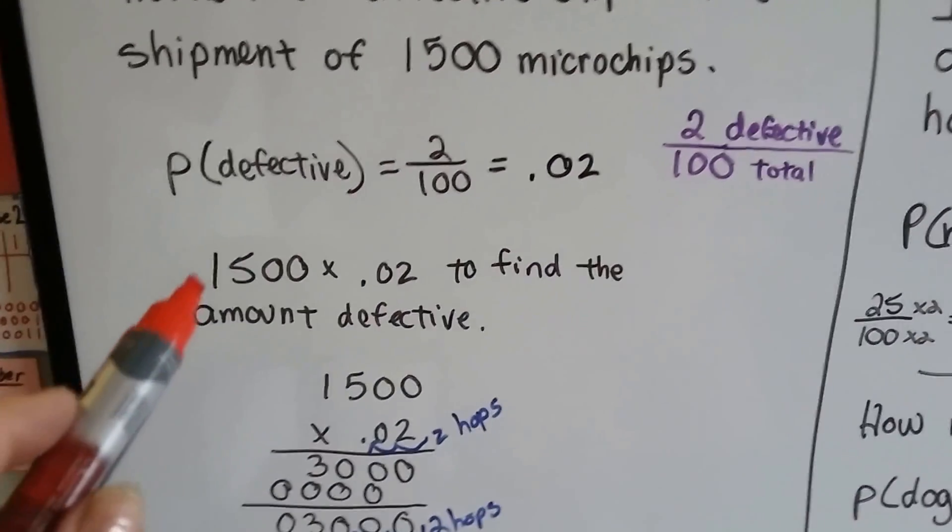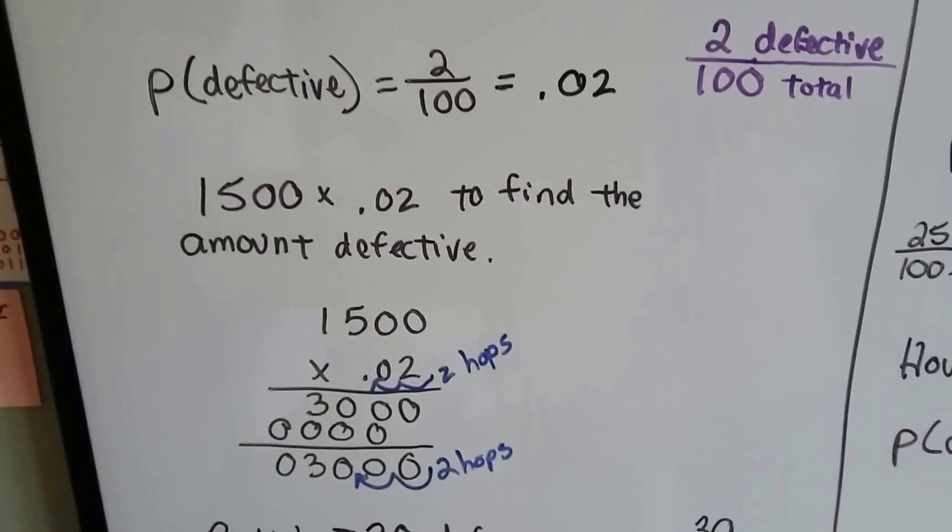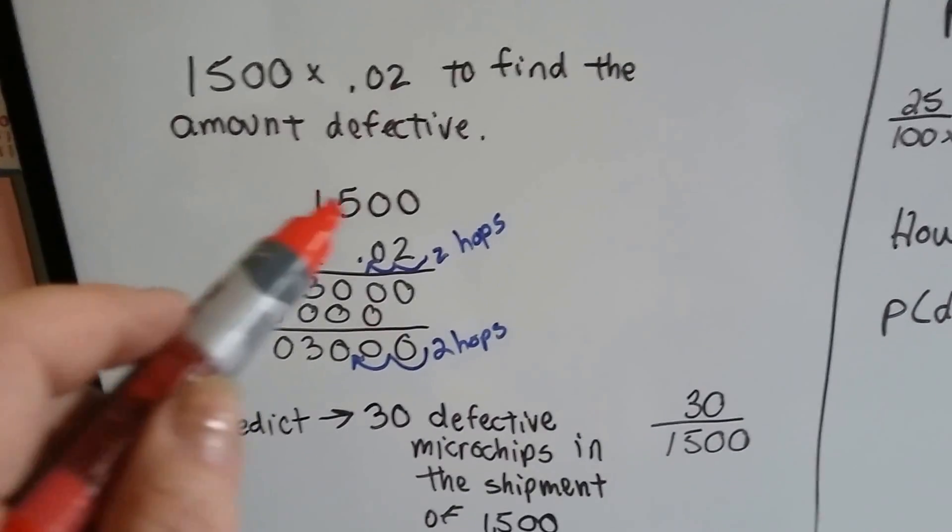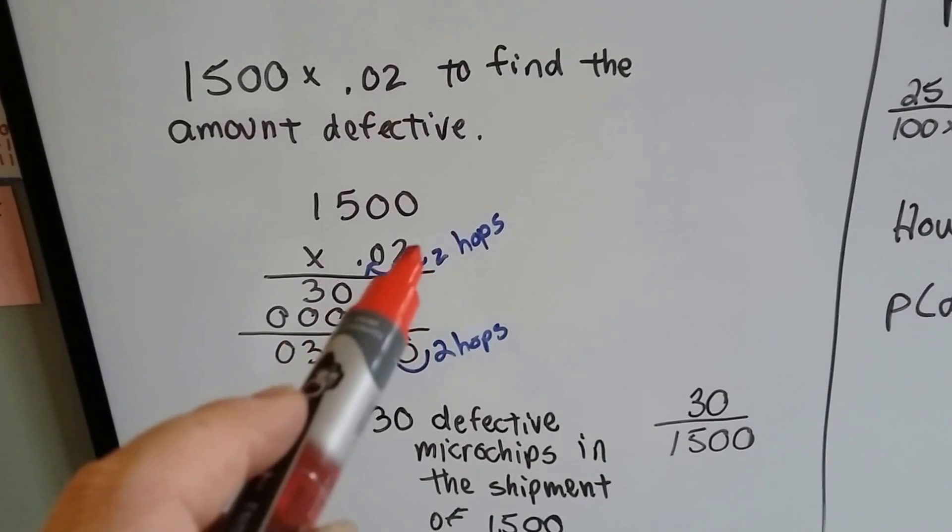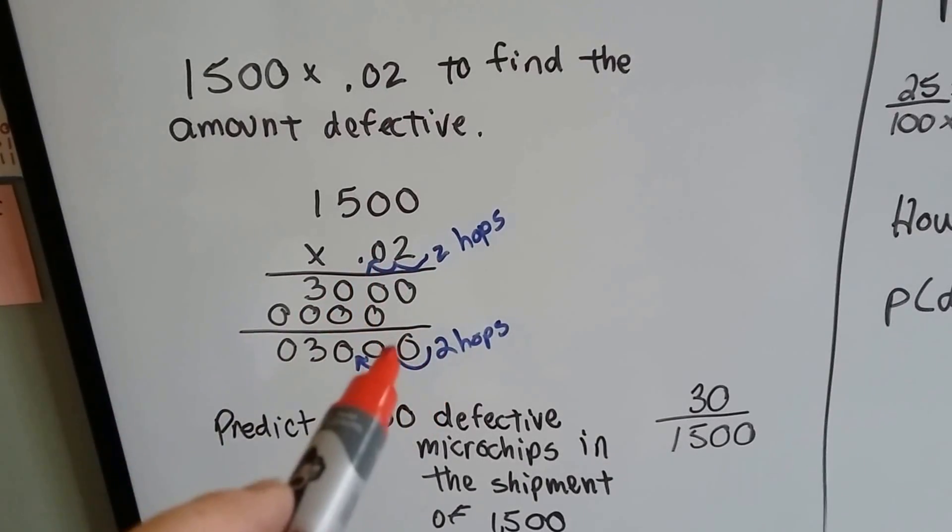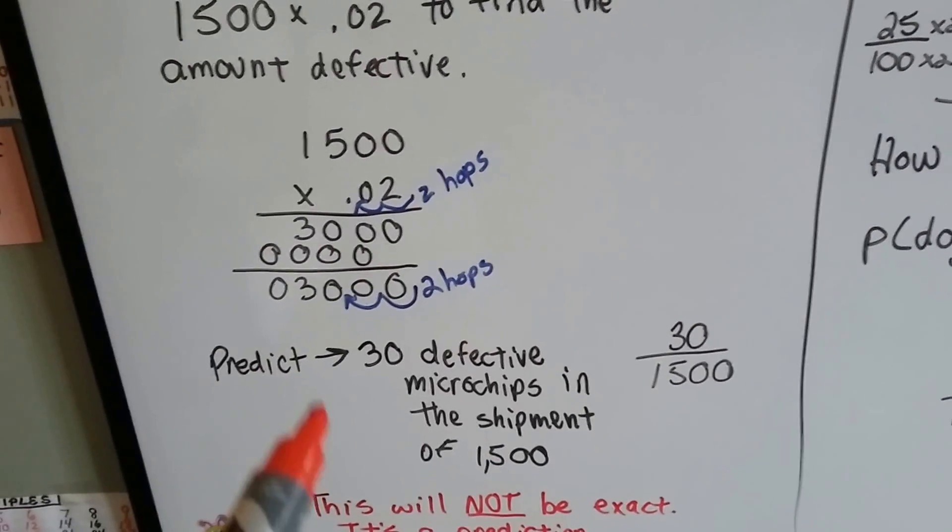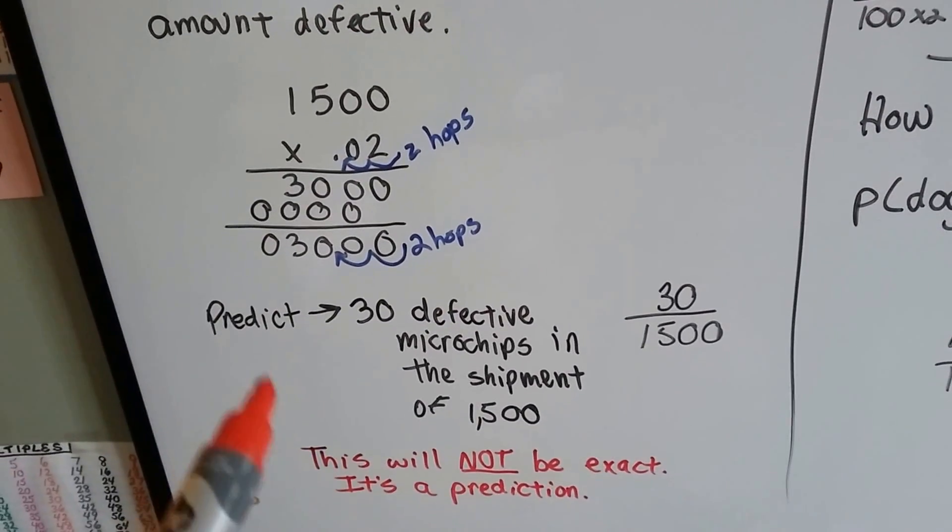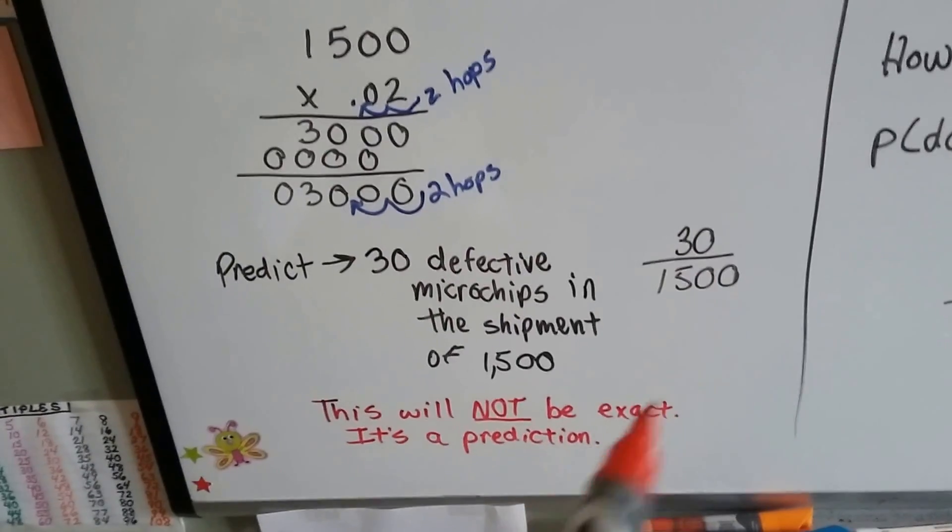All we have to do is multiply 1,500 times .02 to predict how many are defective. We multiply 1,500 times .02, and because there's two hops in the equation, we put two hops in the product, and we get 30 as our prediction of defective microchips in the shipment of 1,500. 30 over 1,500. It's a ratio, proportion.